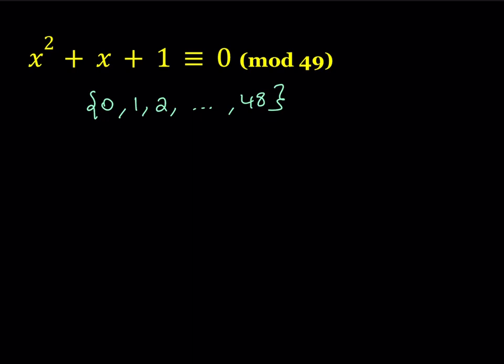We're going to start by considering a lower mod. What is that supposed to mean? Well, 49 is 7², and 7 is a prime number, so that's kind of good. Let's go ahead and consider the following congruence first: x² + x + 1 ≡ 0 (mod 7).